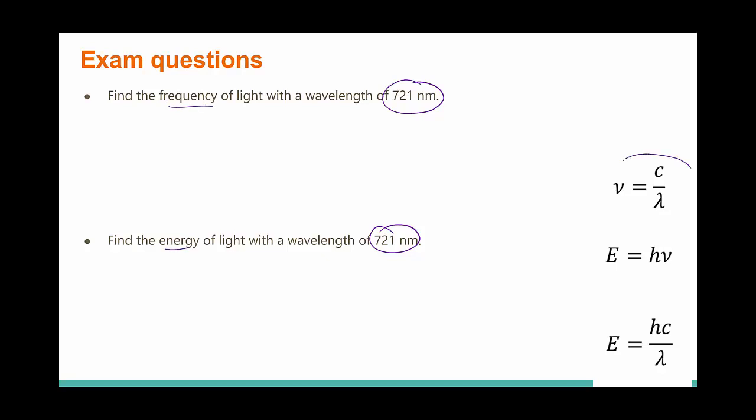That sets us up to use this set of equations. This set of equations lets us convert between energy, frequency, and wavelength. Something we have to remember, though, is our units. Frequency is always in hertz, or one over second. Our speed of light is always in meters per second. The same is true when we're talking about the other equations.